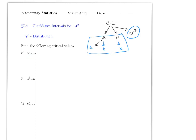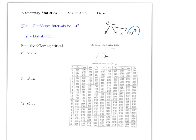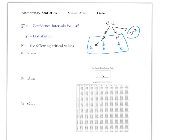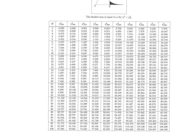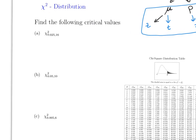First, look up the chi-square table, which you should have downloaded from the Canvas page. It should look something like this. As you can see, this is very similar to the t table — you have the degrees of freedom, the same as the t table — except that the chi-square table has more column values, and you will see why they are needed in a second. To read it is very similar to the t table.